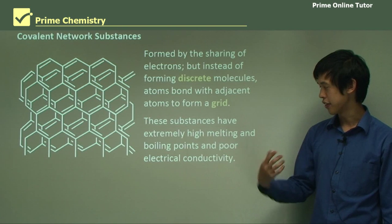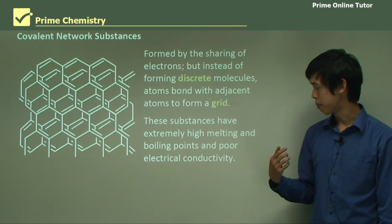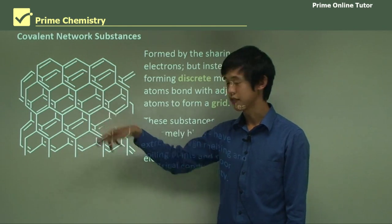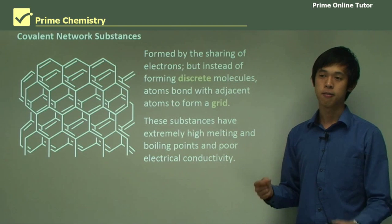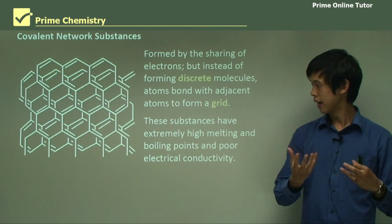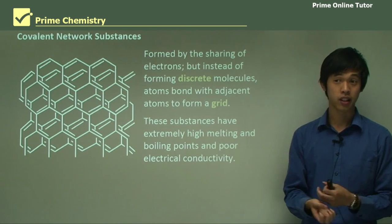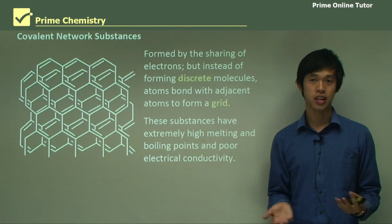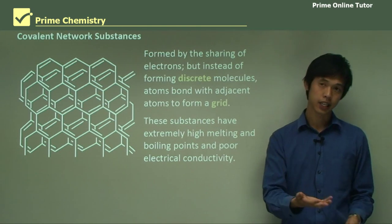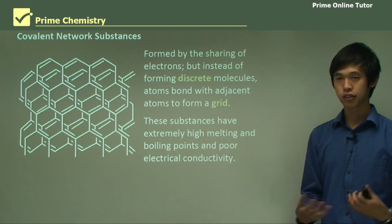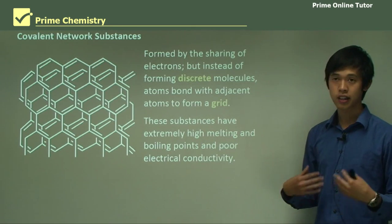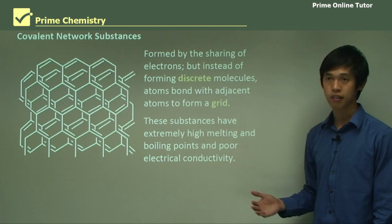Covalent network substances have extremely high melting and boiling points and poor electrical conductivity. The high melting and boiling points come because each of these bonds is very hard to break, and there are millions of them. In order to separate the elements so that they're free to move, you would have to break thousands upon thousands of bonds. Like the molecular case, all of the electrons are stuck in these bonds, so they can't conduct electricity.